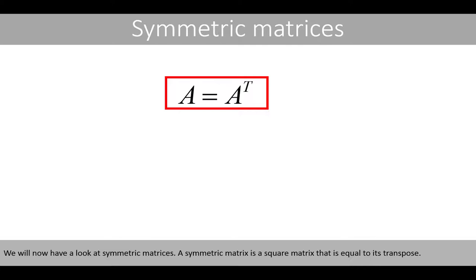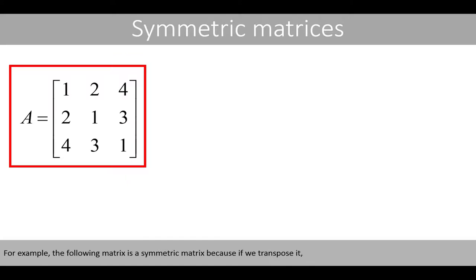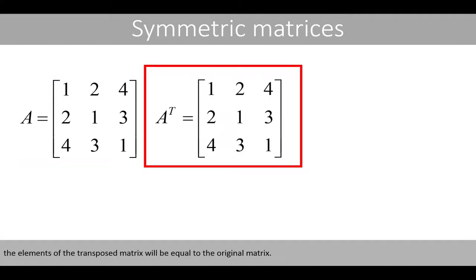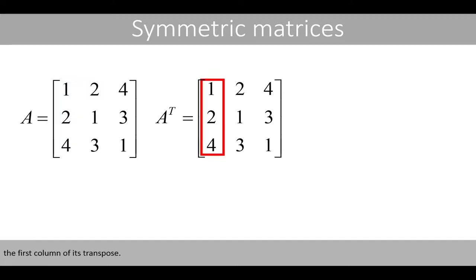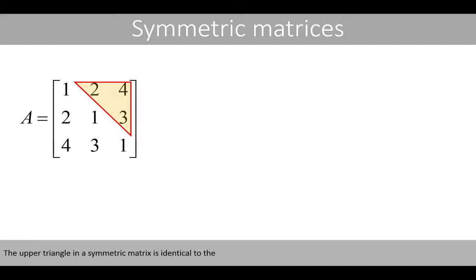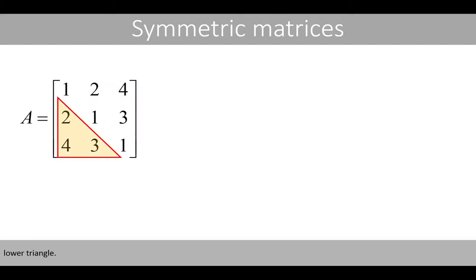We will now have a look at symmetric matrices. A symmetric matrix is a square matrix that is equal to its transpose. For example, the following matrix is a symmetric matrix because if we transpose it, the elements of the transpose matrix will be equal to the original matrix. The first column of matrix A is identical to the first column of its transpose. The upper triangle in a symmetric matrix is identical to the lower triangle.